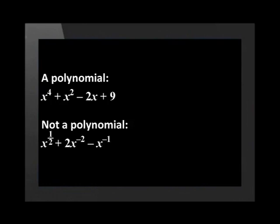x to the power of a half plus 2x to the exponent negative 2 minus x to the exponent negative 1 is not a polynomial because it has negative exponents and exponents that are fractions. In order to factorize a polynomial, we need to determine what its factors are. Remember that a factor is a number that divides another number without leaving a remainder. A factor of a polynomial is often an algebraic term that can be divided into another algebraic term.